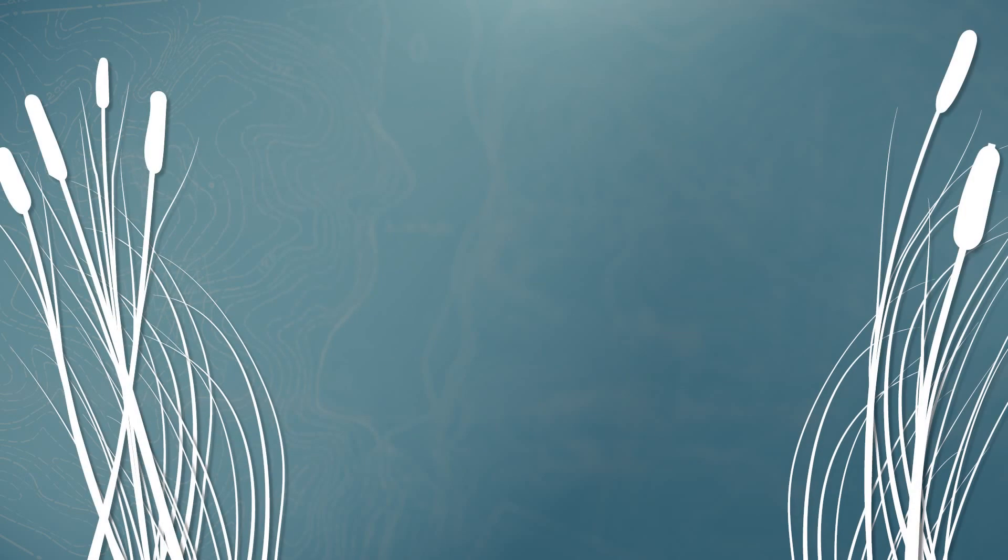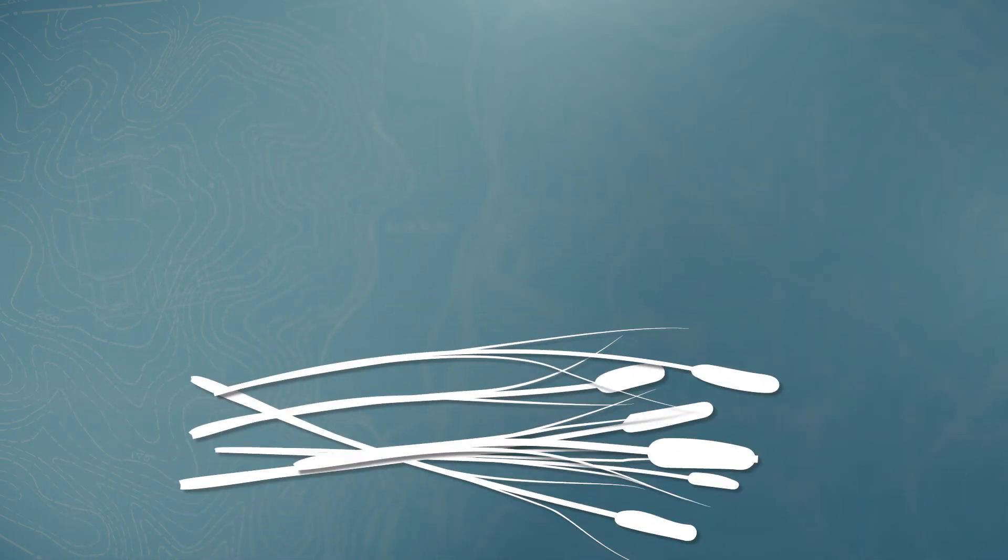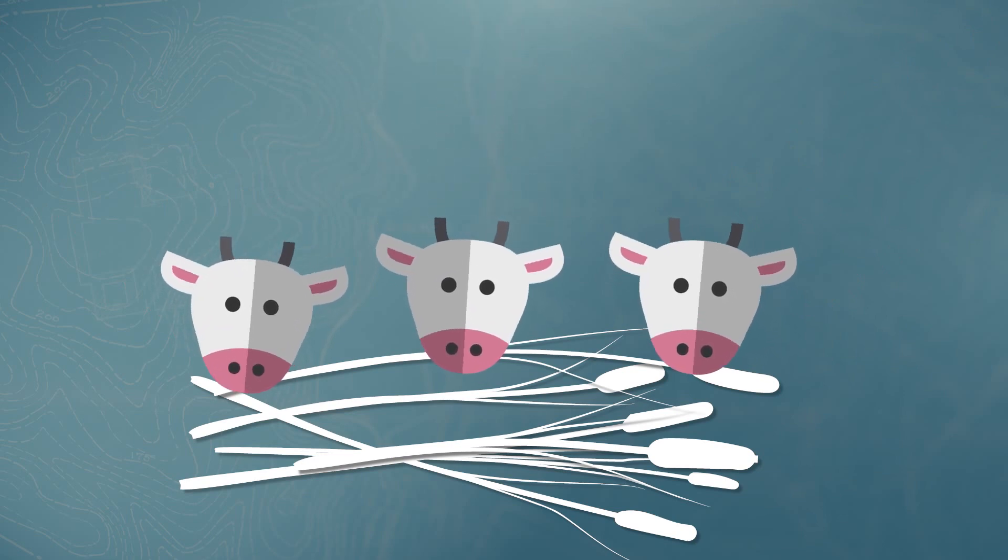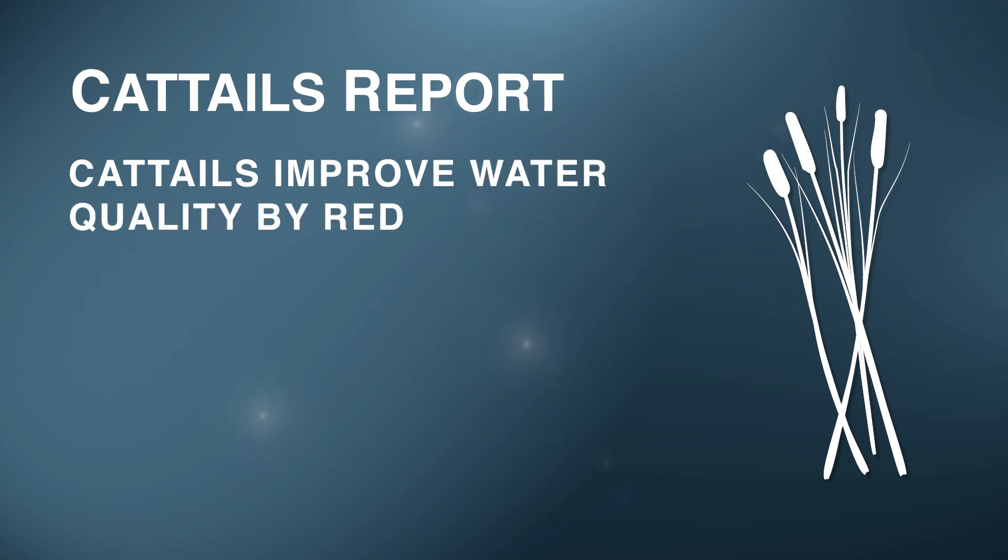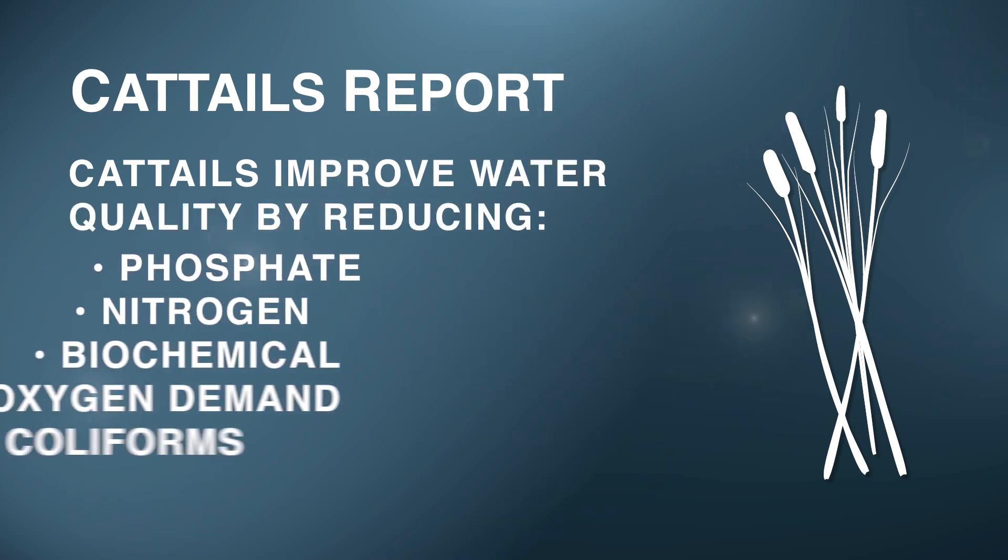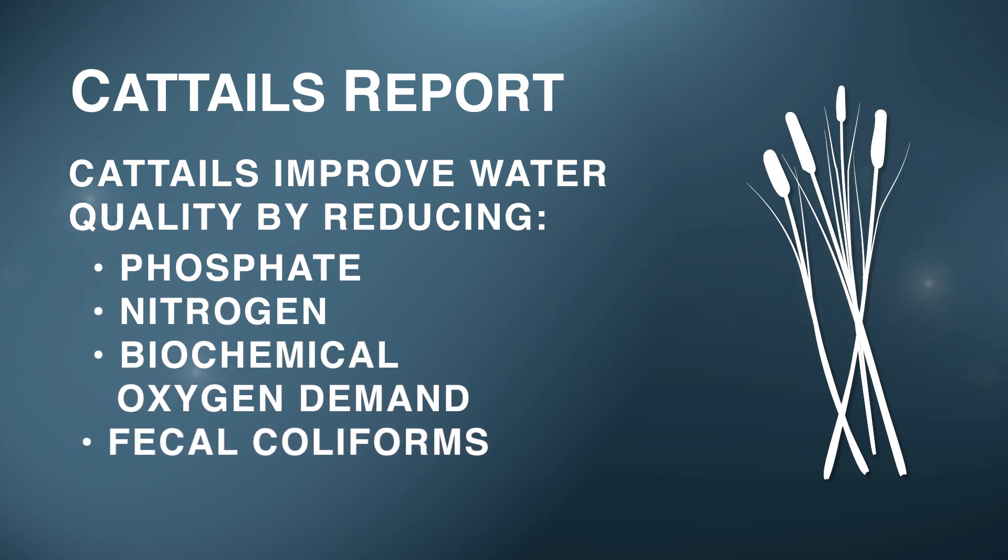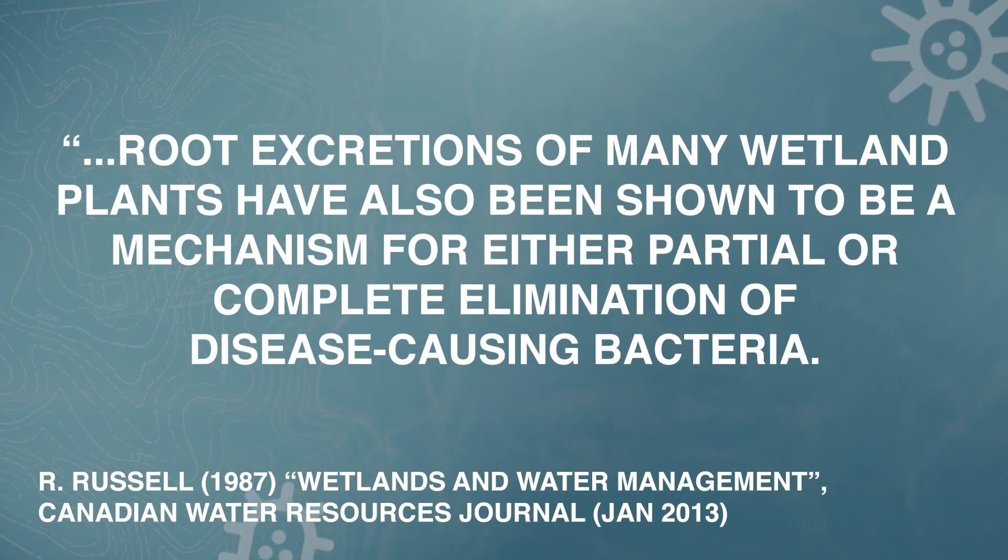Even more amazing is the fact that the reeds, despite their rather obnoxious diet, by the end of the growing season are safe to harvest and use for animal feed. Essentially, these aquatic plants improved water quality by making significant reductions in phosphate, nitrogen, biochemical oxygen demand, and fecal coliforms, in only a three-week period. Even more dramatic improvements in water quality have been documented by other researchers. Root excretions of many wetland plants have also been shown to be a mechanism for either partial or complete elimination of disease-causing bacteria.